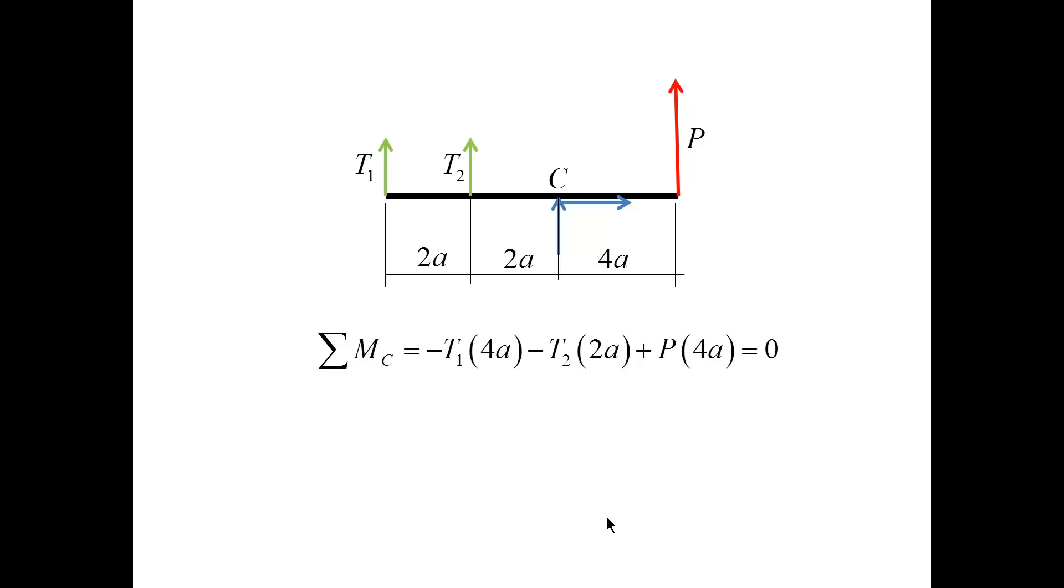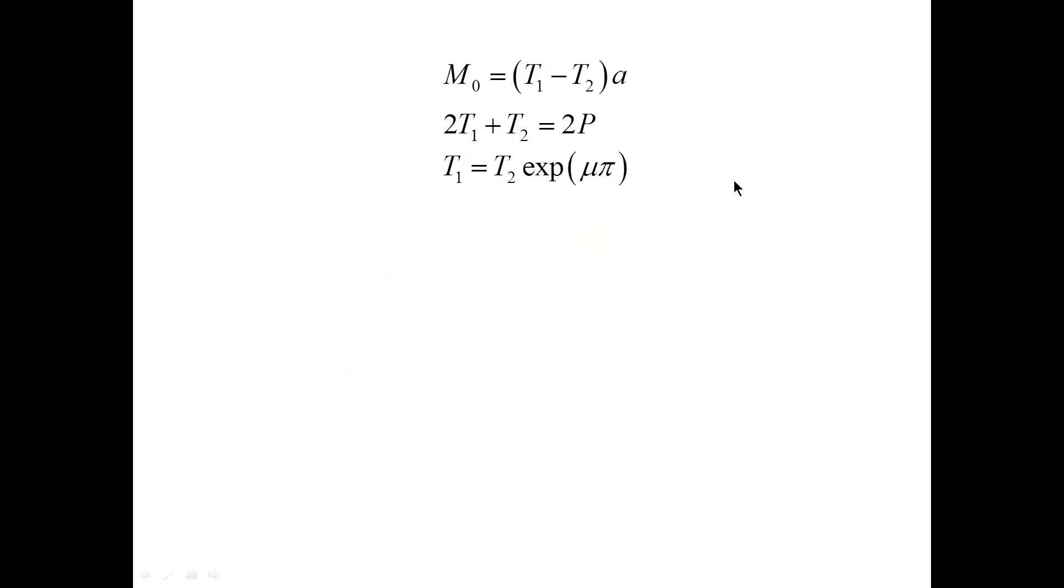And now I can combine the equilibrium equation for the wheel, for the beam, the condition for impending motion, and I will solve the last two equations to express the forces T1 and T2 in terms of P and the coefficient of friction.